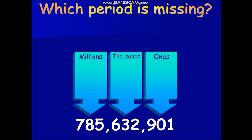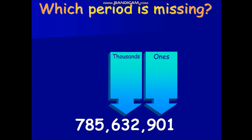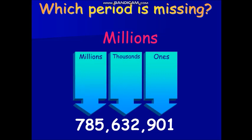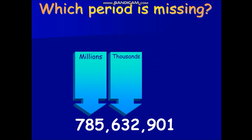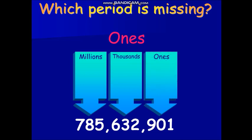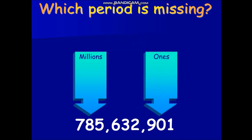Let's see if everyone is paying attention. Which period is missing? Millions is correct. How about now? Which period is missing? Ones is correct. Now, which period is missing? Thousands is correct.